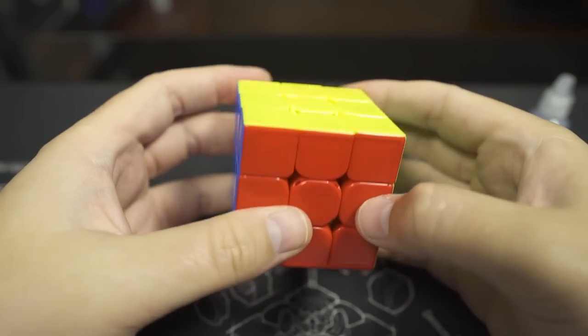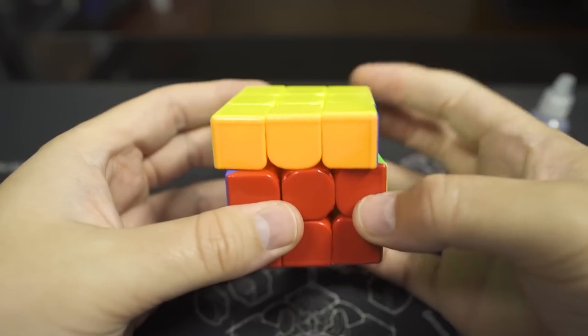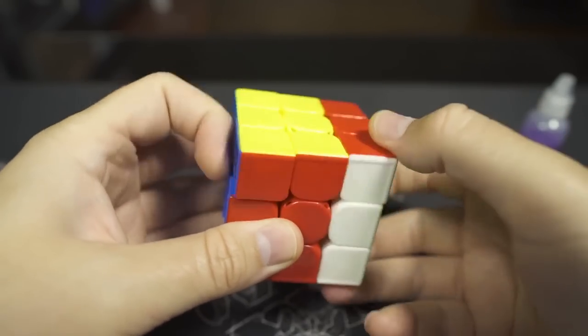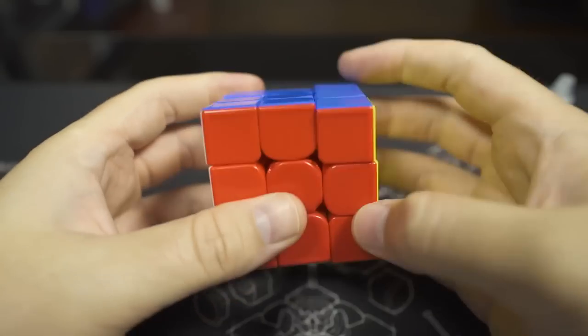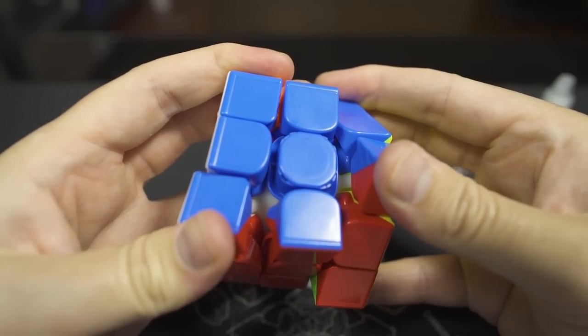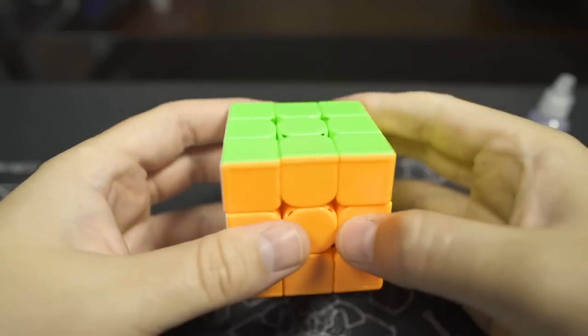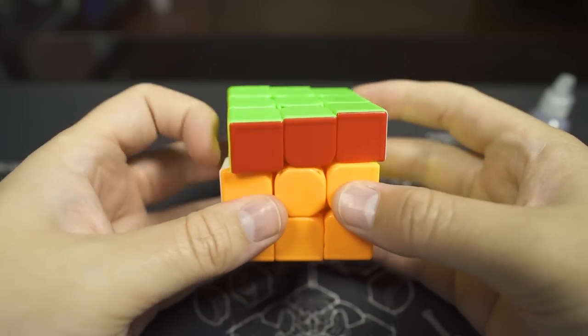This is a brand new GTS 3. Those are actually the first turns on this cube—you can hear it's kind of scratchy. It's just on super loose tensions, right out of the box. Most MoYu cubes are crazy fast out of the box, and this one's no exception.